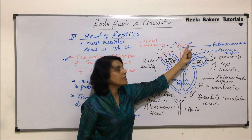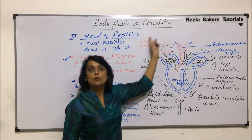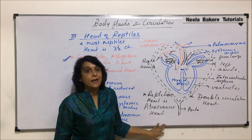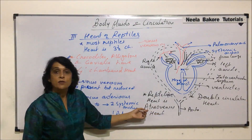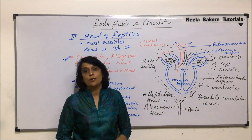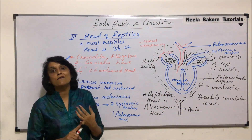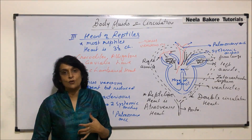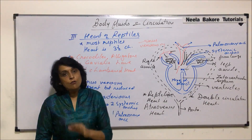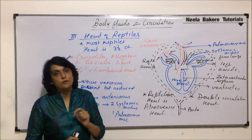The pulmonary arch divides into two branches — one going to the left lung and one to the right lung. The blood being supplied is mixed blood, so the name remains atriovenous, and it is a double circulation heart. We have now seen the heart of fishes, amphibians, and reptiles. In the next segment, we will talk about the human heart and see how the bird's heart differs from the human heart.